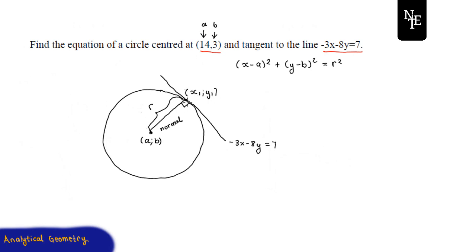The way we're going to tackle finding this point of tangency is by using the fact that these two lines — the radius and the tangent — are both straight lines that intersect at this unknown point. So by setting the equation of the radius and the equation of the tangent line equal to each other, we can find this point of tangency.